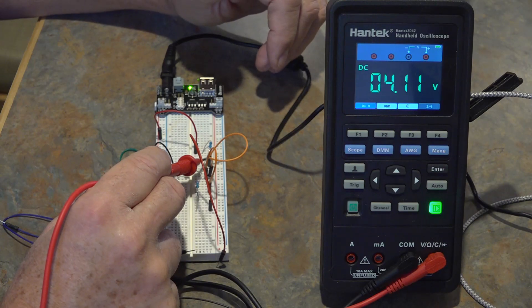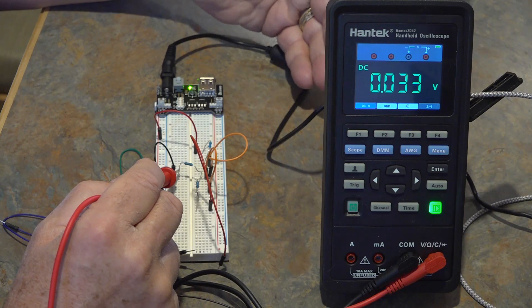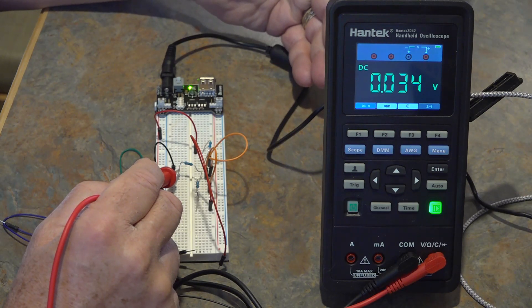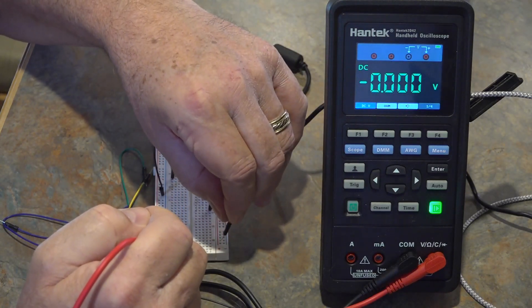And then that goes through R3 to ground I measure 0.03. That's parasitic that's probably just a little bit of voltage drop across the jumper wire in the breadboard. So I know that that side of the circuit is good.